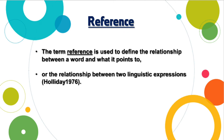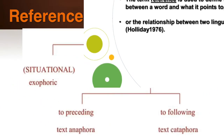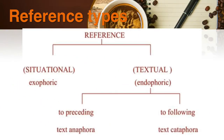In doing SFL, reference is also an important element. The term reference is traditionally used in semantics to define the relationship between a word and what it points to in the real world. However, in Halliday and Hassan's 1976 model, it simply refers to the relationship between two linguistic expressions. There are two types of reference: first is exophoric or situational, meaning outside of the text; the other is endophoric or textual, meaning inside of the text.